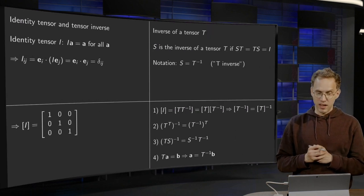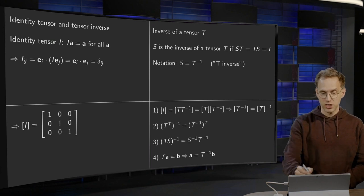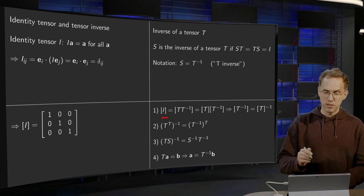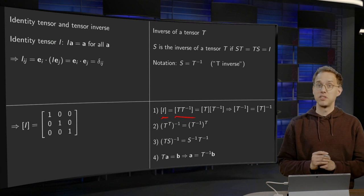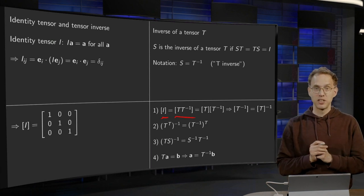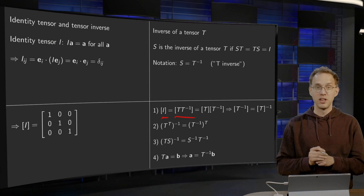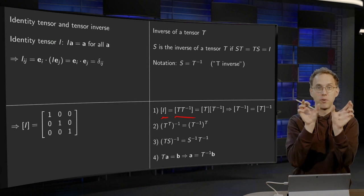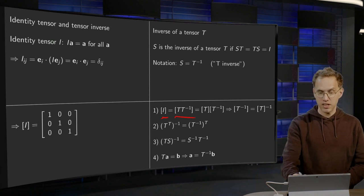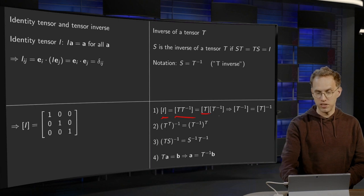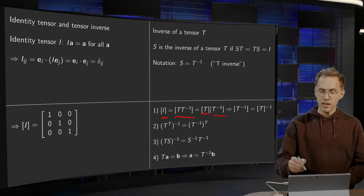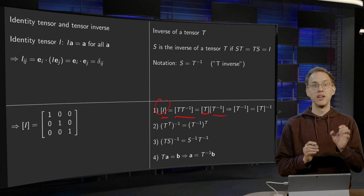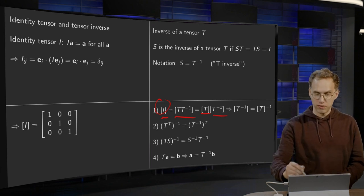Now we have a few properties. What about the matrix? We know that the identity tensor equals T times T inverse. The matrix of a product of tensors equals the product of the matrices of the separate tensors, so this equals the matrix of T times the matrix of T inverse. This has to be the identity matrix. So what is the matrix of T inverse here?